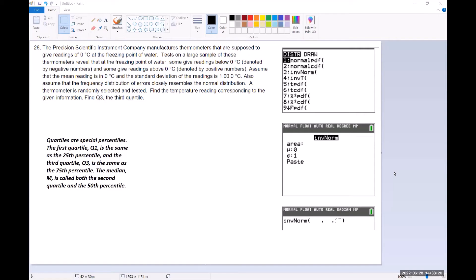All right, let's go ahead and do number 28, which was a request that was made. The Precision Scientific Instrument Company manufactures thermometers that are supposed to give readings of zero degrees Celsius at the freezing point of water.